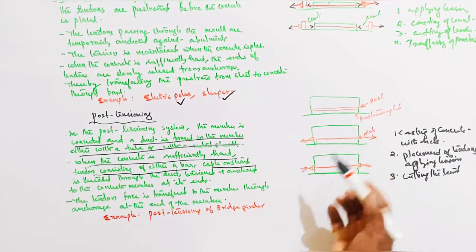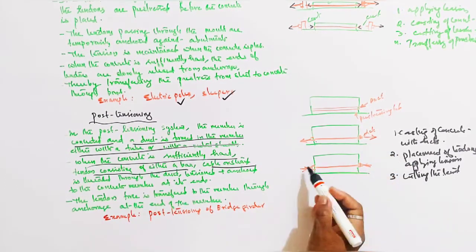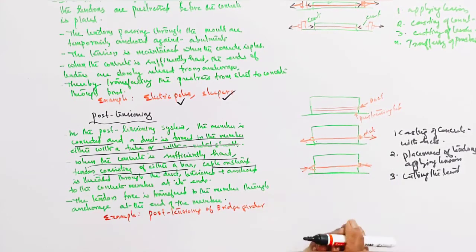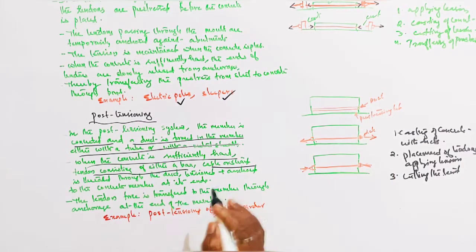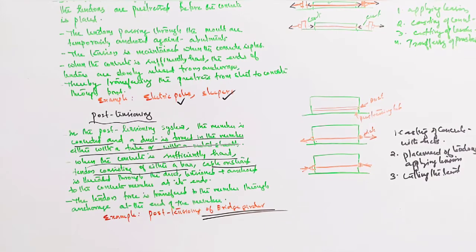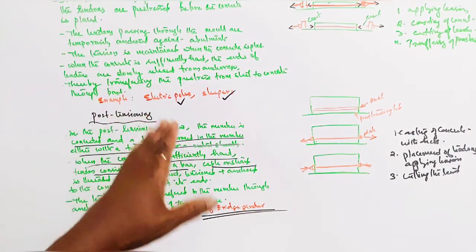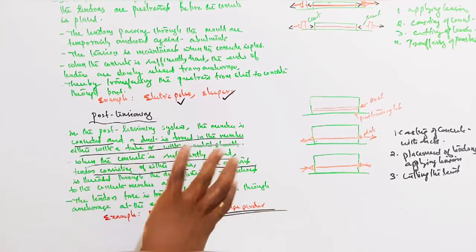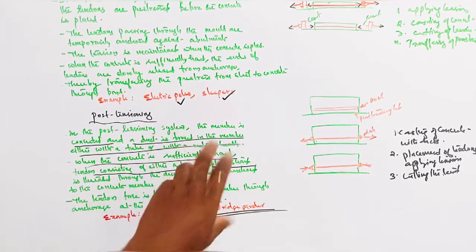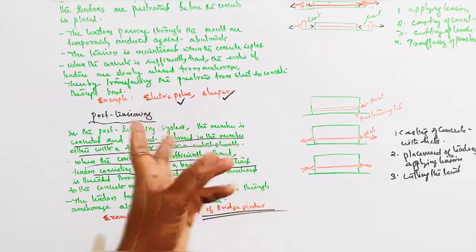The tendon force is transferred to the member. The best example for post-tensioning is bridge girders. Pre-tensioning applications: electric poles, railway sleepers. Post-tensioning application: bridge girders.